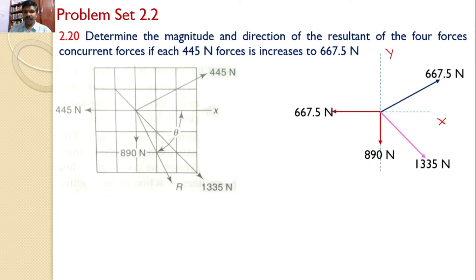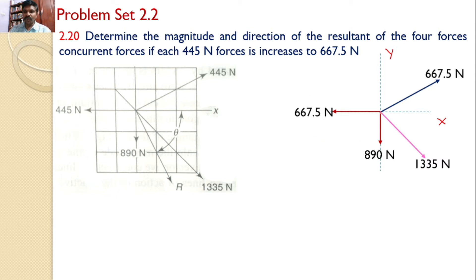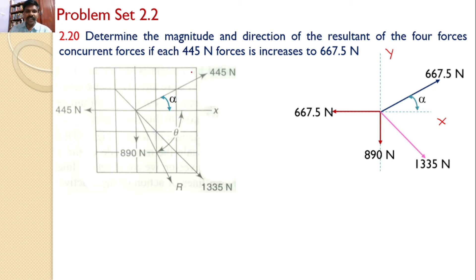In order to solve this problem, first we need to identify the angles made by all four forces along the X and Y axes. The 819 Newtons force acts vertically along the Y axis, and the 667.5 Newtons force acts along the X axis towards the left side. The other two forces are inclined, and their angles with the X and Y axes are unknown. Let the angle made by the 667.5 Newtons inclined force with the X axis be alpha.